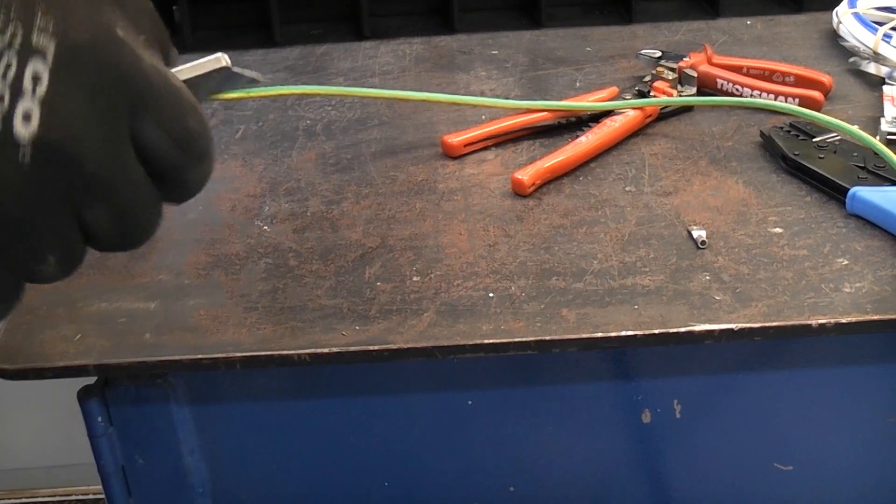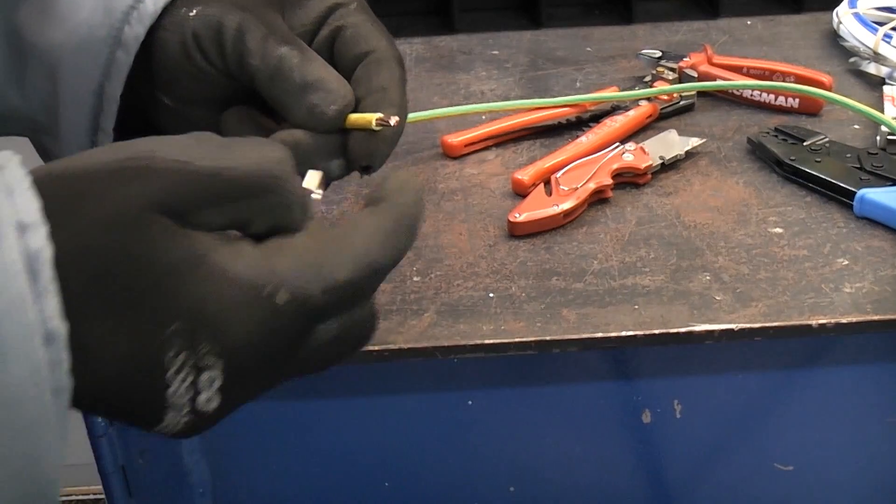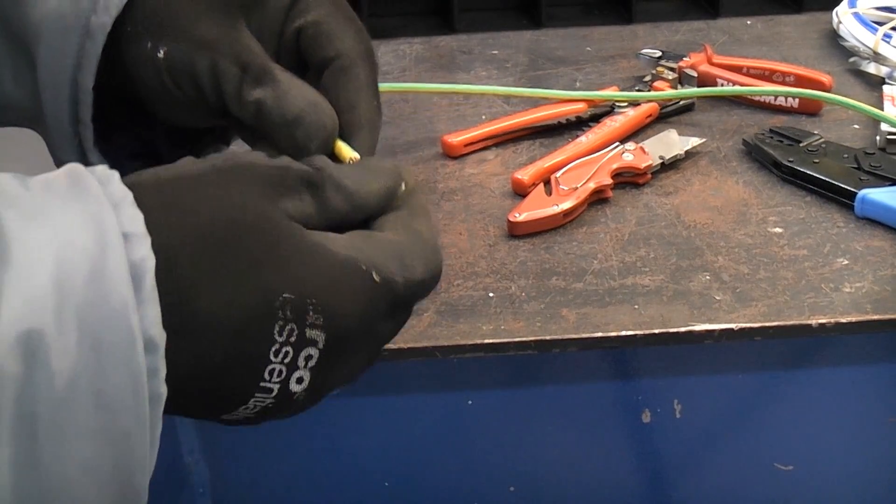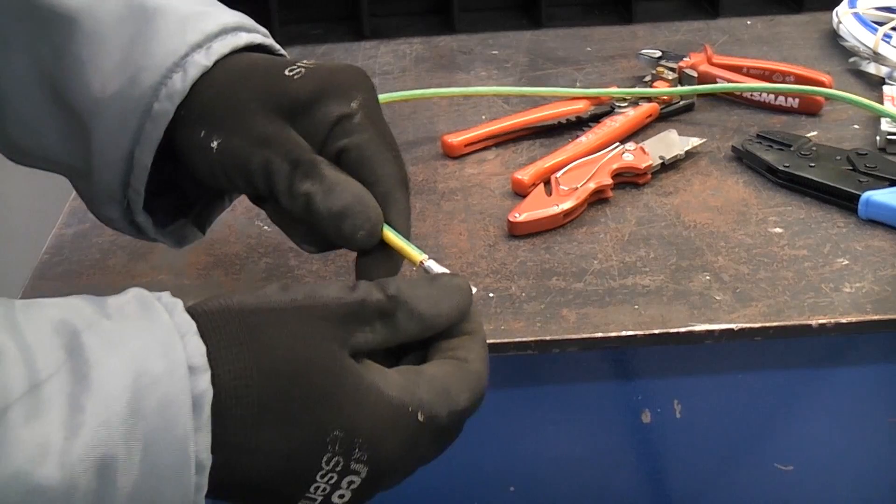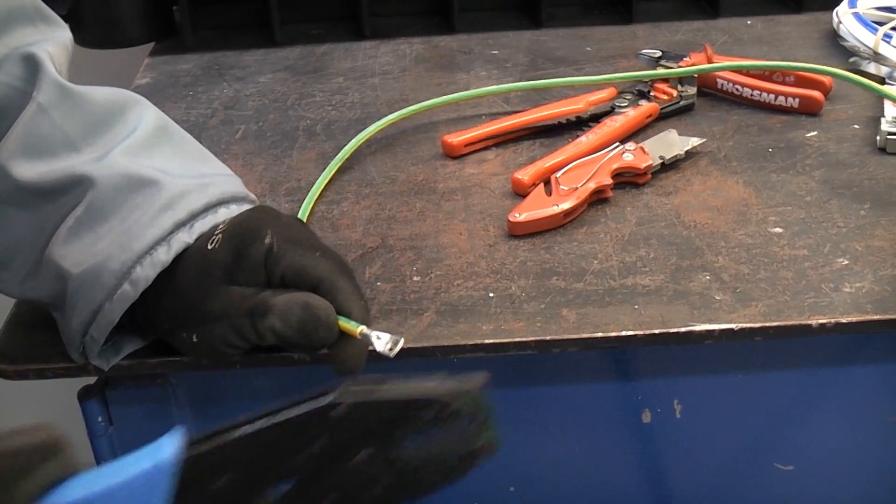I'm actually just going to take a little bit more of that off using a knife. We're then going to take a non-insulated lug. I'm going to put that on the end of the metal conductor. Then I'm just going to tap that on.